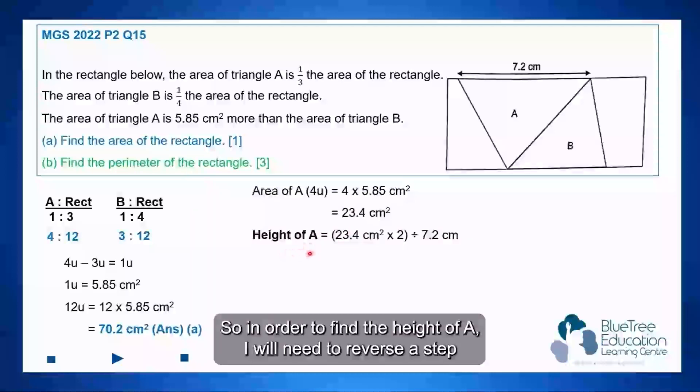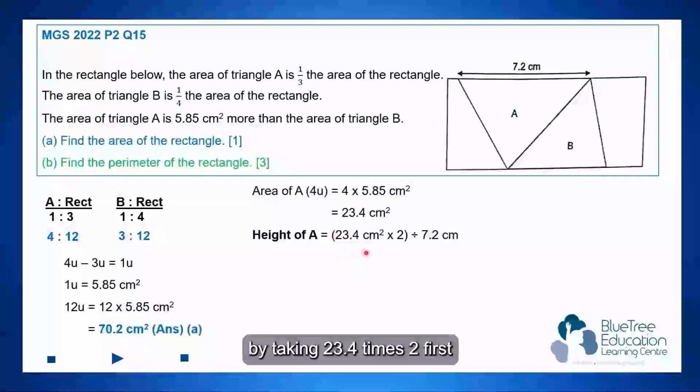So in order to find the height of A, I will need to reverse the step by taking 23.4 times 2 first, and then divide by the base of 7.2 cm to find the height, which is 6.5 cm.